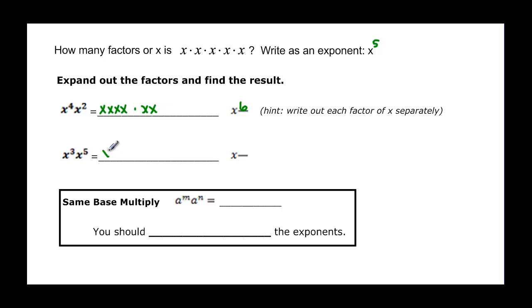And if I do this one I have three factors of x, and I'm going to multiply that times five factors of x. And when I add them I have one, two, three, four, five, six, seven, eight factors of x. But what if I had x to the 30 times x to the 50? I don't want to multiply those all out, so we have these properties.